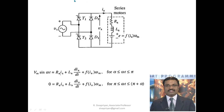Using a rectifier, the first case is more or less similar to a half-controlled rectifier fed separately excited DC motor. The diagram and everything remains the same. The only difference is that in the series motor, the field winding is in series with the armature. The current flowing through the field winding and the current flowing through the armature remains the same.